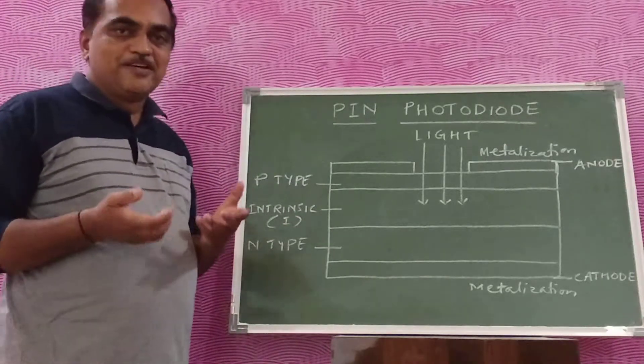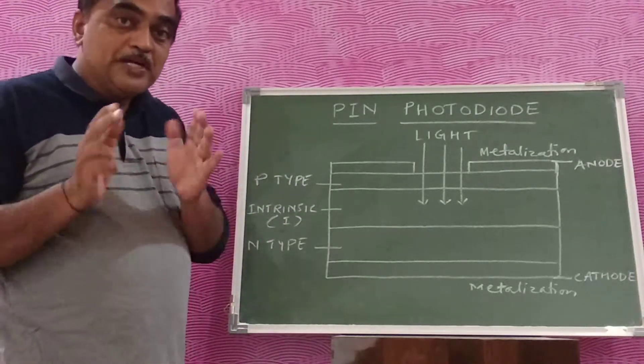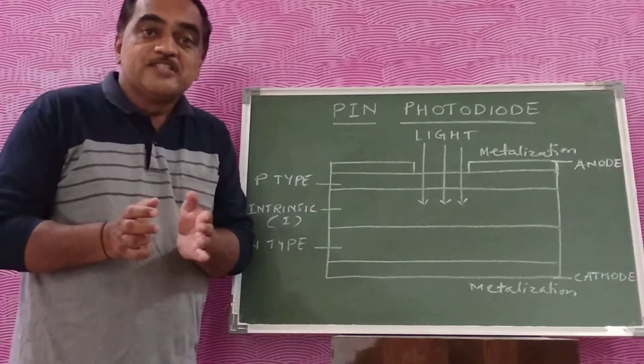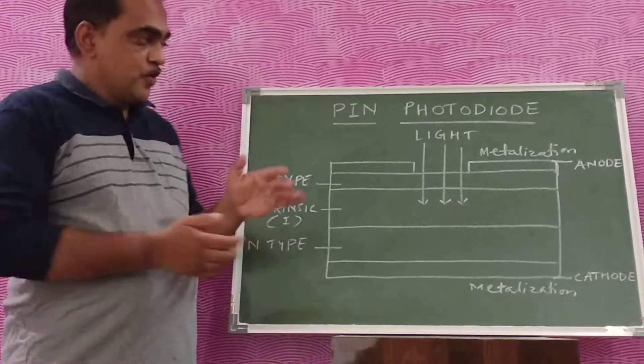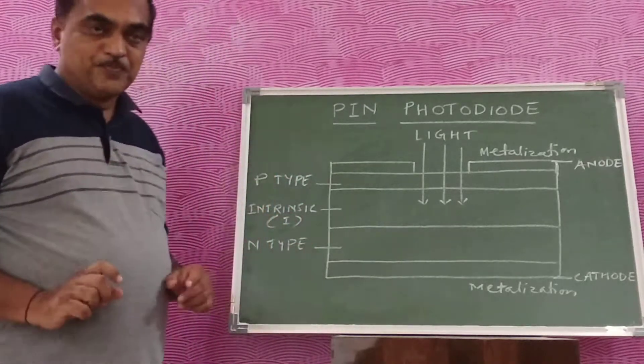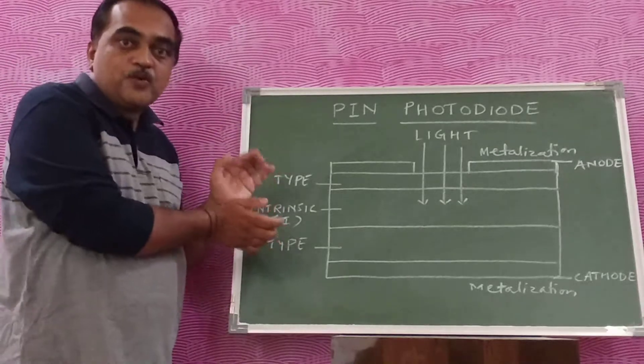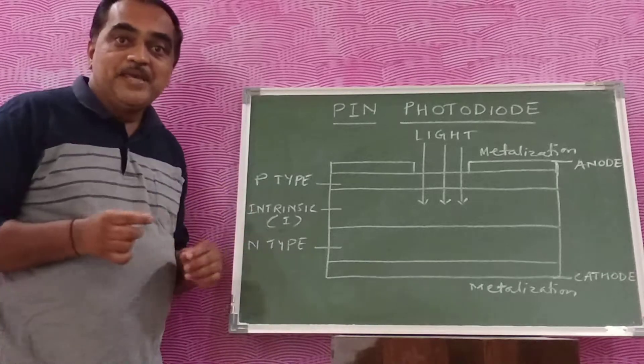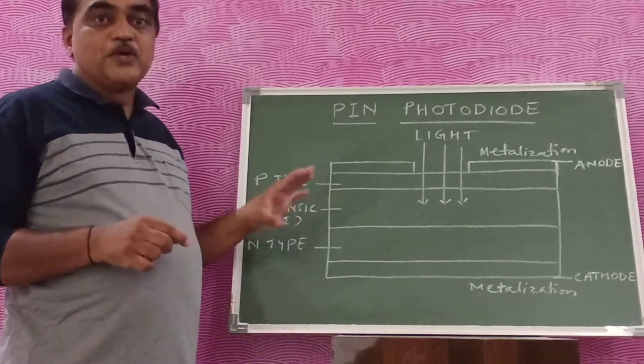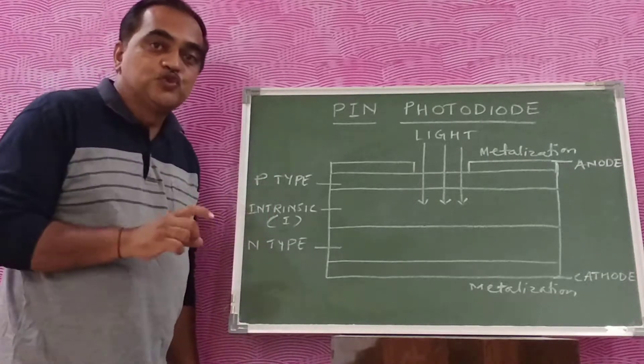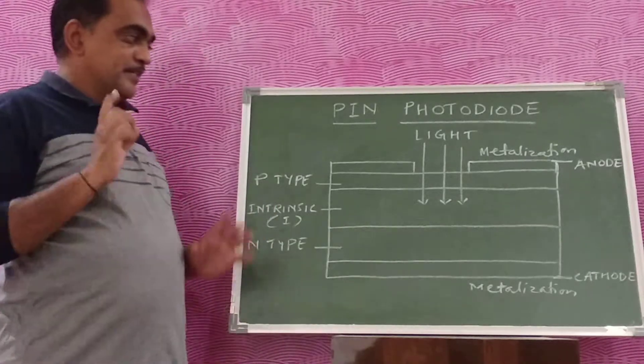A normal depletion layer will form, but the intrinsic layer also helps. So there is a wide depletion layer when we connect this diode in reverse bias for its operation. Once that wide depletion layer is there, it makes the capacitance of the diode very low, and this diode can be used for higher frequencies.